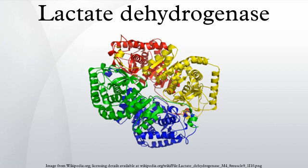Lactate dehydrogenase catalyzes the interconversion of pyruvate and lactate with concomitant interconversion of NADH and NAD+. It converts pyruvate, the final product of glycolysis, to lactate when oxygen is absent or in short supply, and it performs the reverse reaction during the Cori cycle in the liver. At high concentrations of lactate, the enzyme exhibits feedback inhibition, and the rate of conversion of pyruvate to lactate is decreased.